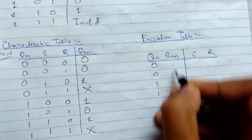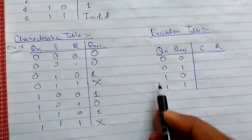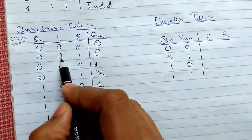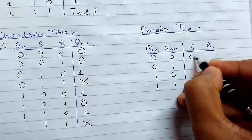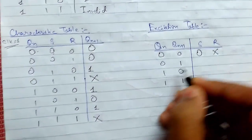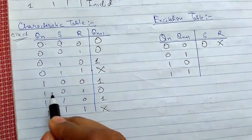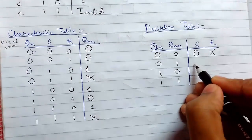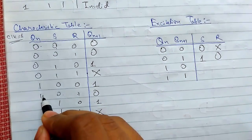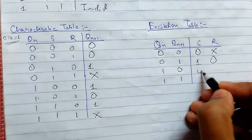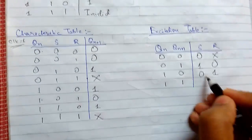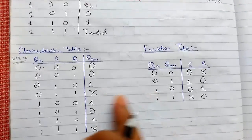The excitation table is obtained from the characteristic table. For the transition 0→0, there are two cases and S remains the same but R changes, so that is not allowed — S is 0 and R is don't care. For 0→1, S is 1 and R is 0. For 1→0, S is 0 and R is 1. For 1→1, S is don't care and R is 0.